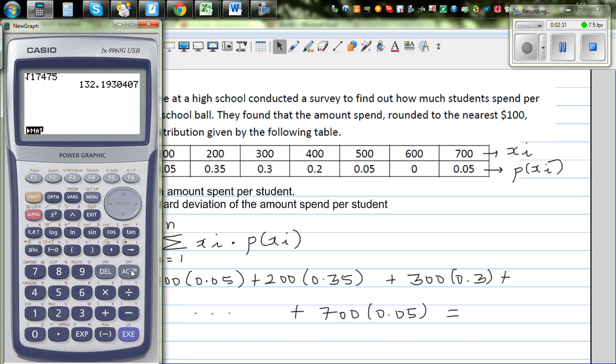Let me delete this. So this is 100 times 0.05, plus 200 times 0.35, plus 300 times 0.3, plus 400 times 0.2, plus 500 times 0.05. This will not give you any probability for 600, so I am not doing that. Plus 700 times 0.05. That will give you $305.